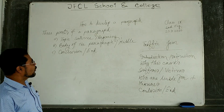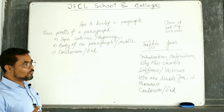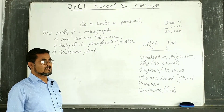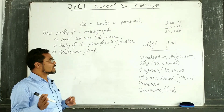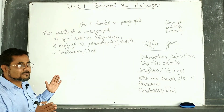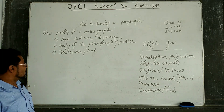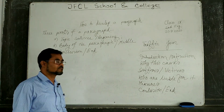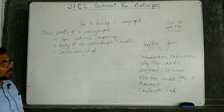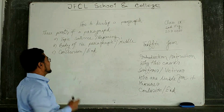Next, the body of the paragraph, or middle. The body of the paragraph would be according to the main point of the paragraph, and related sentences of the paragraph would be in this part. The last part of the paragraph is the conclusion, or end. The introduction of the paragraph would be explained in the conclusion.